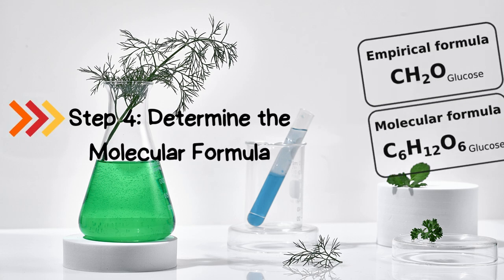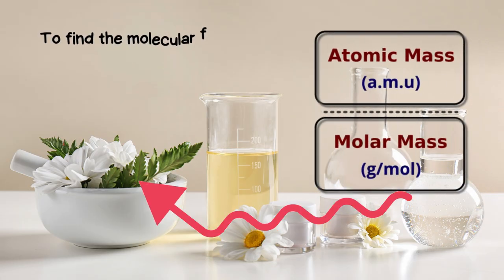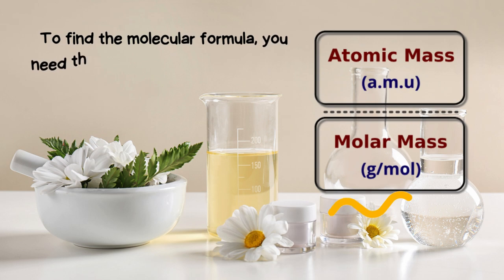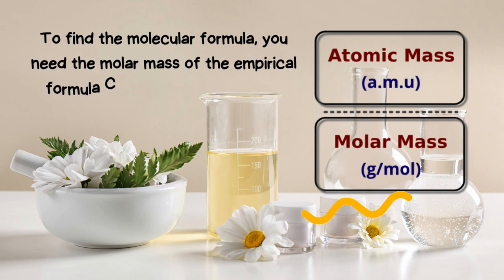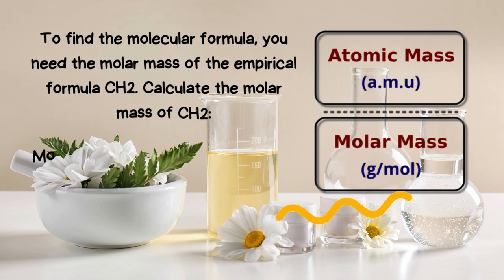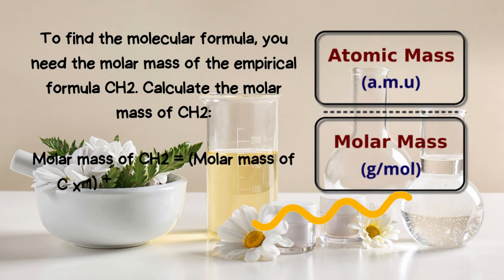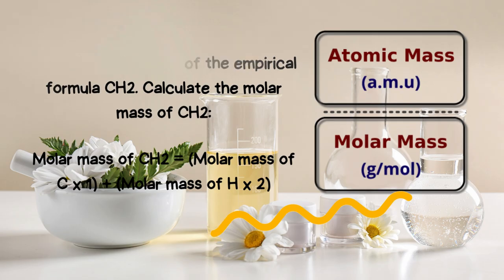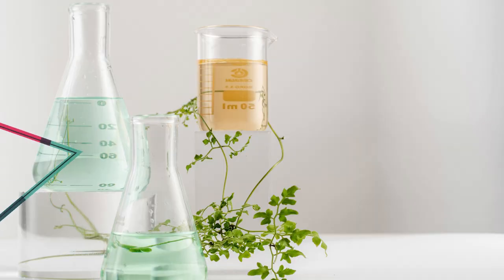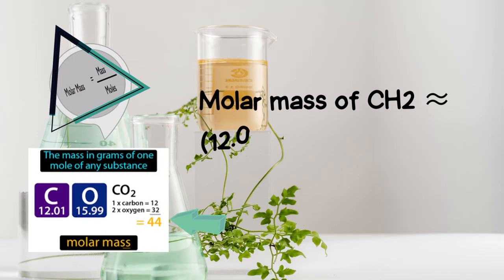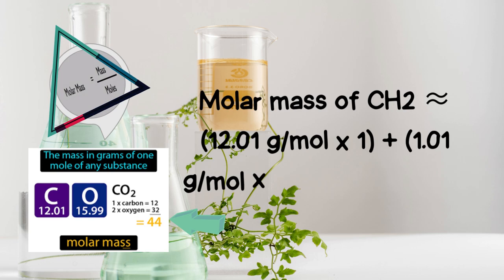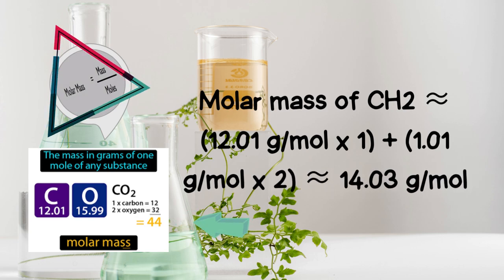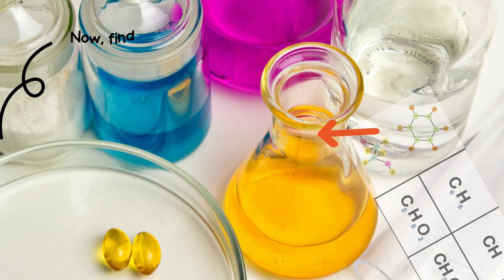Step 4: Determine the molecular formula. To find the molecular formula, you need the molar mass of the empirical formula CH₂. Calculate the molar mass of CH₂: molar mass of CH₂ equals molar mass of C × 1 plus molar mass of H × 2, which is 12.01 grams per mole × 1 plus 1.01 grams per mole × 2 = 14.03 grams per mole.